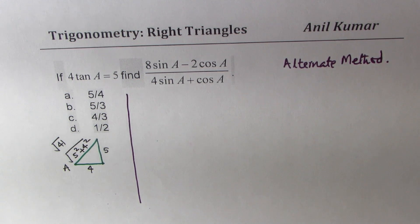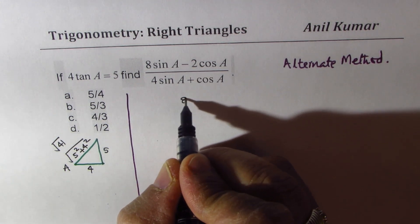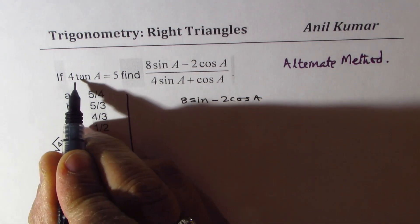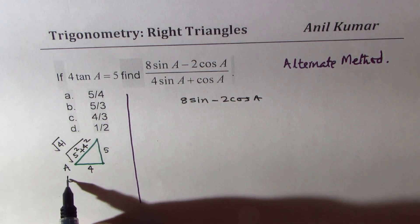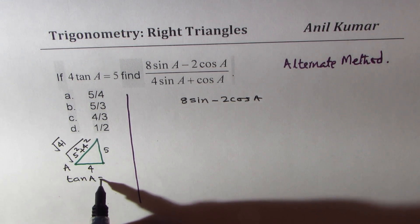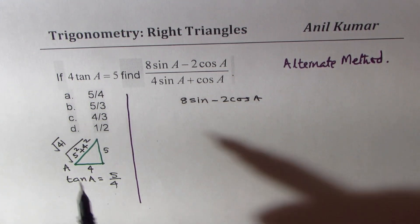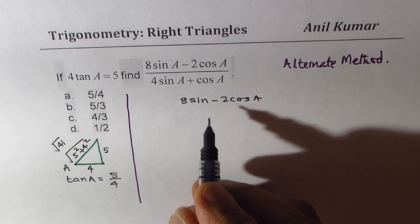Now we are looking for (8 sin A - 2 cos A). We are given what tan A is. We are given that tan A is 5 over 4. Or 4 tan A is 5. And we want this.